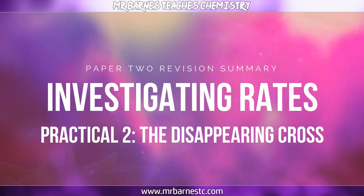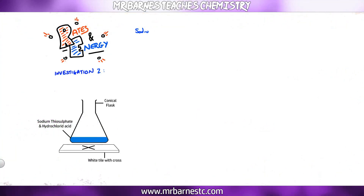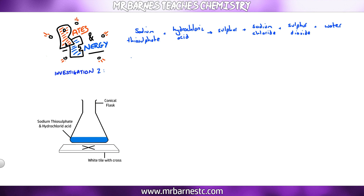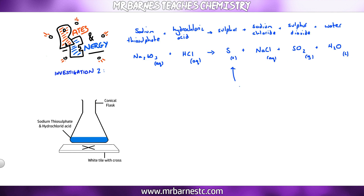The second investigation is the disappearing cross. We take sodium thiosulfate and react it with hydrochloric acid, producing sulfur, sodium chloride, sulfur dioxide, and water. The symbol equation: Na₂SO₃ + HCl → S + NaCl + SO₂ + H₂O. The key thing is that sulfur is a solid — it makes the solution go cloudy, so the cross appears to disappear.